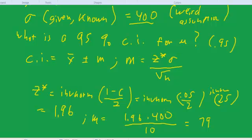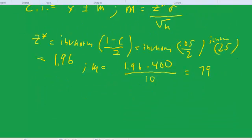And that, in turn, means that the confidence interval is equal to x-bar, which was 2,800 plus or minus 79. And then, what that means is,